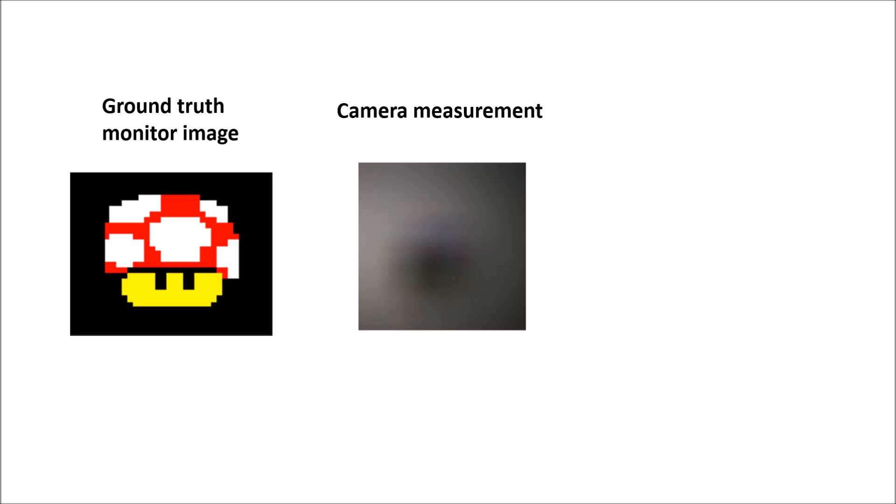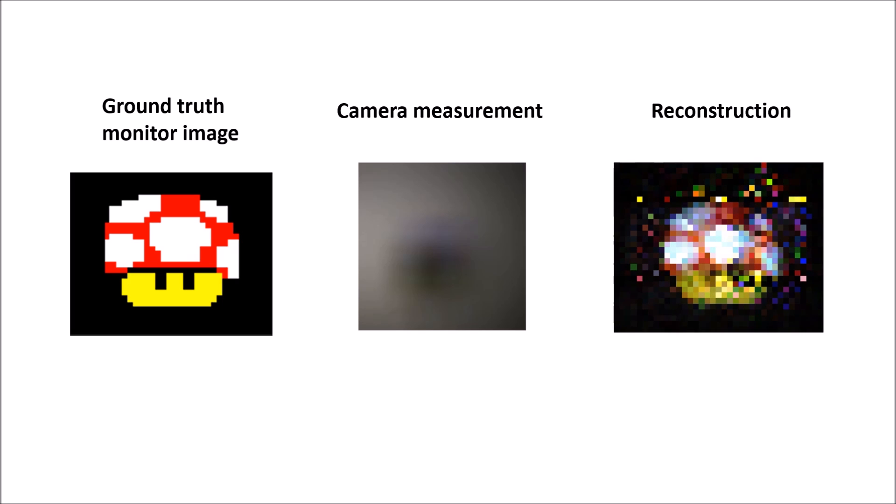For a given scene, feeding the captured image through our computational algorithm recovers an estimate of the hidden object and hidden scene image. In addition to being able to clearly resolve larger features like the general shape, redness of the head and yellow face, smaller features such as the white patches are well resolved and hints of even smaller features such as two eyes and the unibrow are also visible.